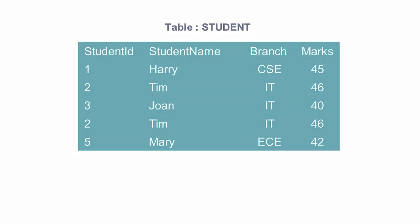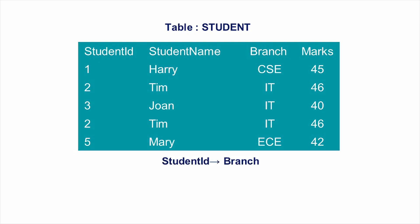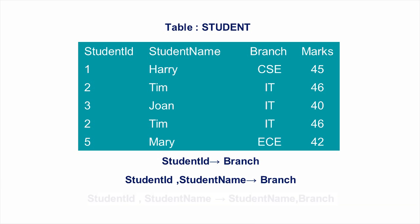Again, consider the same table. Student_id determines branch is a non-trivial functional dependency since branch is not present in the left hand side. Student_id, student_name determines branch is also a non-trivial functional dependency. Student_id, student_name determines student_name and branch is also a non-trivial functional dependency since student_name and branch combined is not a subset of the left hand side.